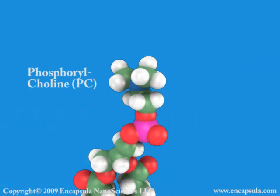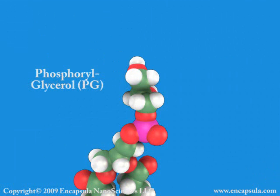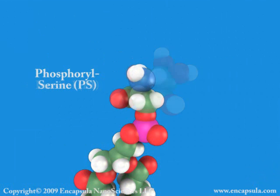The most common phospholipid head group found in nature is phosphorylcholine, or PC. Other head groups include phosphorylethanolamine, known as PE, phosphorylglycerol, known as PG, phosphorylinositol, known as PI, and phosphorylserine, known as PS.